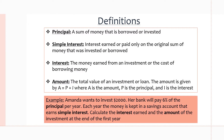Let's go over the key terms we want to know when we work with simple interest. The first is principal. This is the actual amount we want to invest or borrow initially. So if I'm investing into a bond or borrowing money for a house or for a car, this is the principal — the money that we're getting from the start.